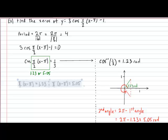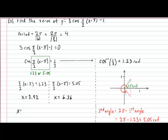Continuing our procedure allows us to determine that x could either equal 3.92 radians or x could equal 6.36 radians. This finally allows us to conclude that, for our example, the zeros will occur when x equals 3.92 radians and every 4 radians after that, or the zeros will also occur at 6.36 radians and every 4 radians after that.